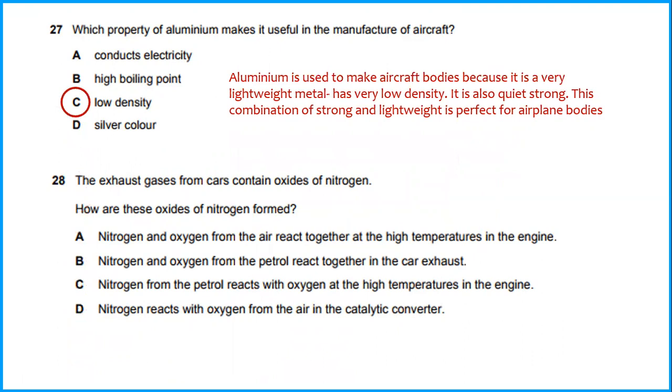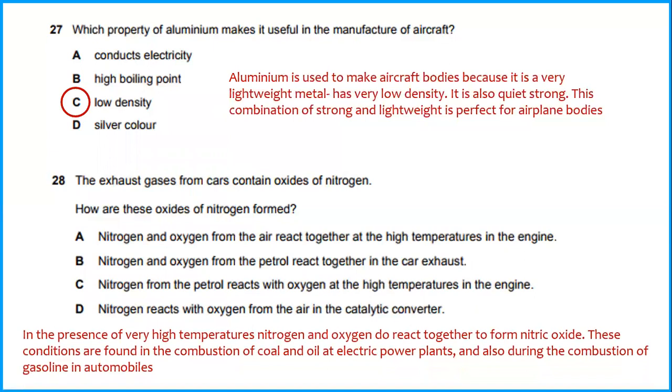The exhaust gases from cars contain oxides of nitrogen. In the presence of very high temperature, nitrogen and oxygen do react together to form nitric oxide. These conditions are found in the combustion of coal and oil at electric power plants and also during the combustion of gasoline in automobiles. The answer for this will be nitrogen and oxygen from the air react together at the high temperature in the engine.